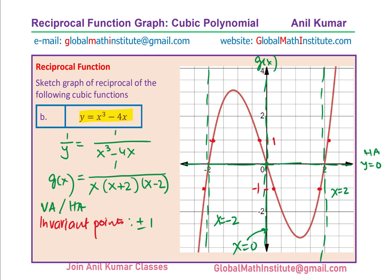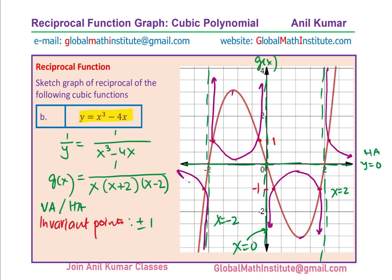Positive reciprocal is positive. Let me sketch the graph now. Going through the invariant point at 1, the curve on the right side — where the original value is almost 3 — gives a reciprocal of one third. The reciprocal of a maximum is a minimum, so the curve dips accordingly. On the left side, we approach the vertical asymptote and the horizontal asymptote y equals 0. That is how we sketch the reciprocal of this function.